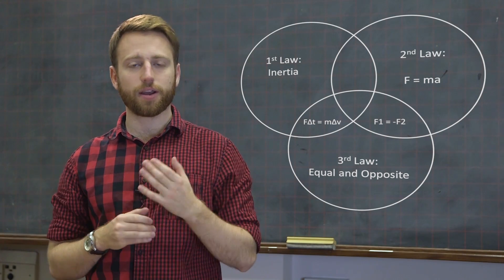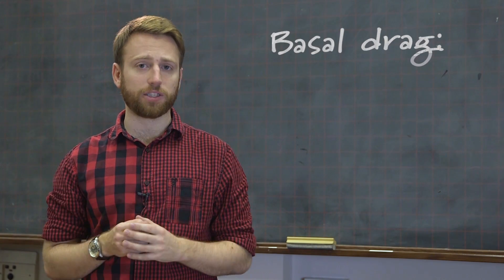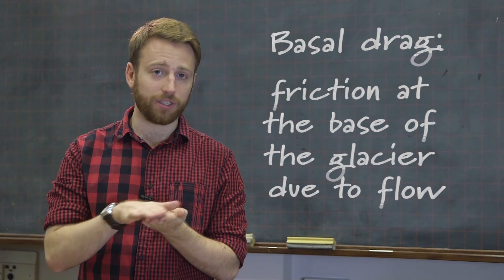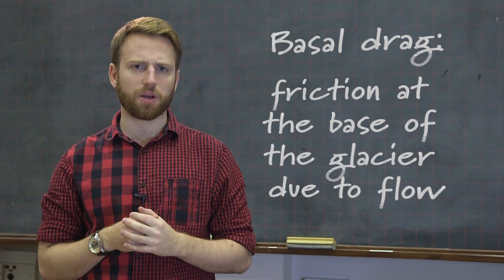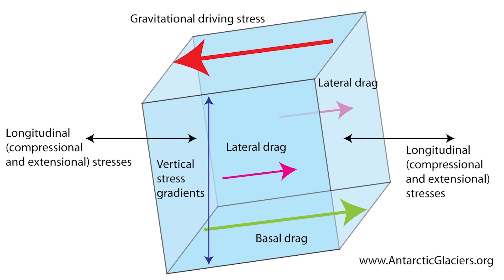According to Newton's third law, we know there must be an opposing force. In glacial systems, this is primarily basal drag. Basal drag is quite simply the friction that is generated as the ice flows over whatever surface it is on. Additional force comes from friction with the side walls, and longitudinal forces from up and downstream ice.